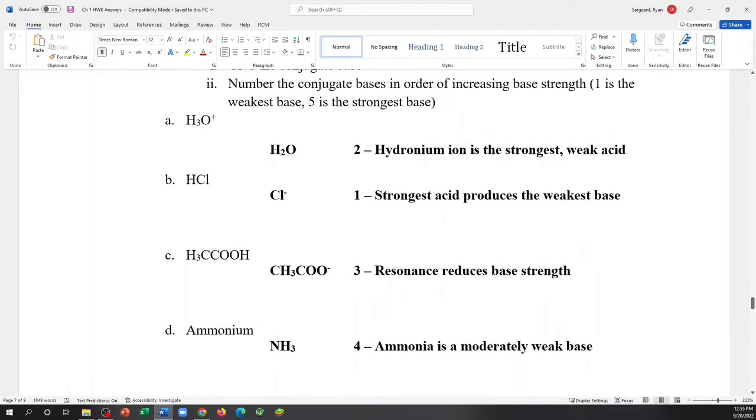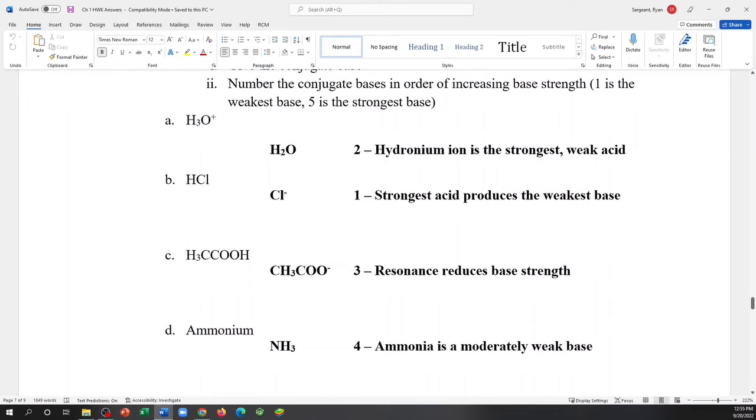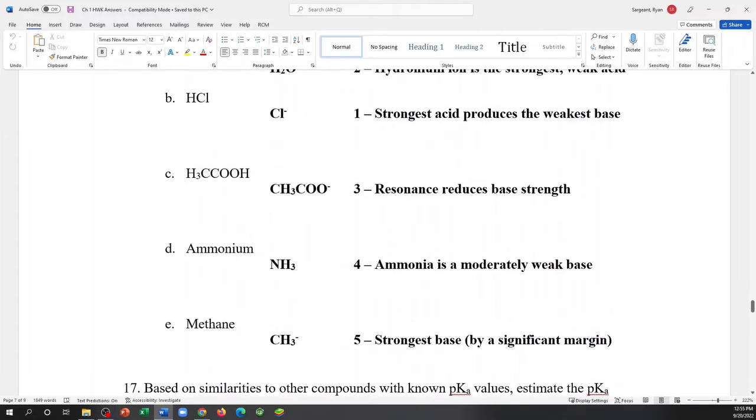The second strongest acid on this table should be H3O plus. Remember that H3O plus is how we define strong acids. And so therefore its conjugate base would be the second weakest base. So the one goes with chloride, the two goes with water. The remaining three, this is the remaining three.